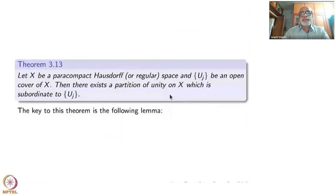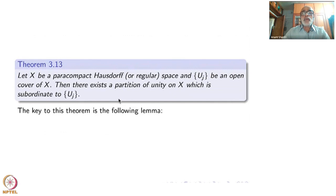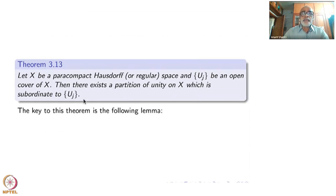Here is the theorem: take a paracompact Hausdorff or regular space X and let {U_j} be an open cover for X. Then there exists a partition of unity on X which is subordinate to {U_j}. Subordinate to {U_j} means that the support of each θ_i — namely θ_i inverse of (0,1] — will be contained in one of the U_j's. In fact, its closure itself is a refinement.